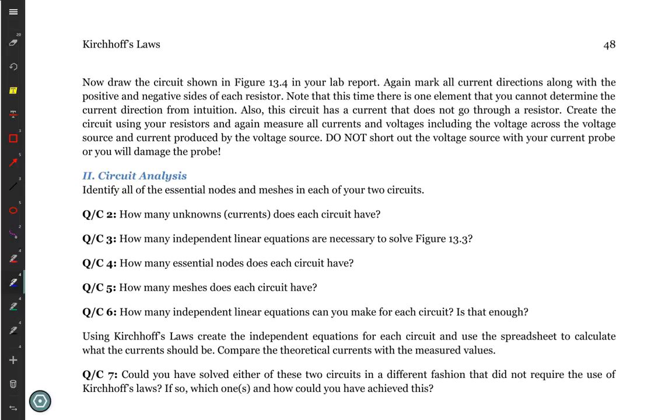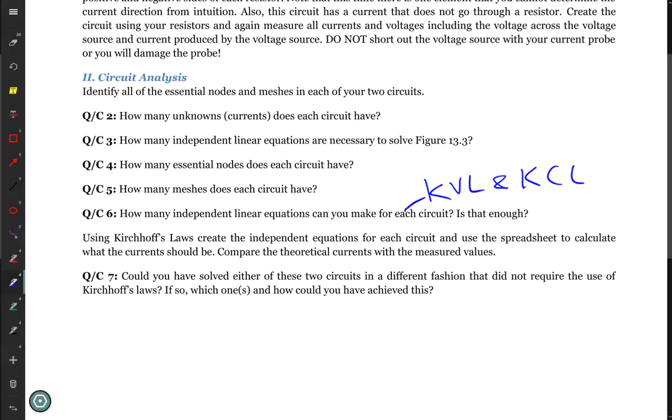So you answer that. How many meshes there are for each one? And then how many linear independent equations can you make? This is using Kirchhoff's voltage law and Kirchhoff's current law. And is that enough? And then you have here a final question that you only answer once. Could you solve these in a different way? So you look at each one. If so, which one or ones could you have solved in a different way? A different way is something like by simplification. I do not mean I could have used nodal analysis. I could have used mesh analysis. That's not what I mean. I mean using simplification like combined resistors in series, combined resistors in parallel.